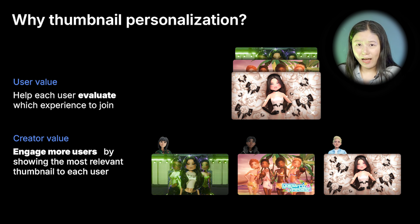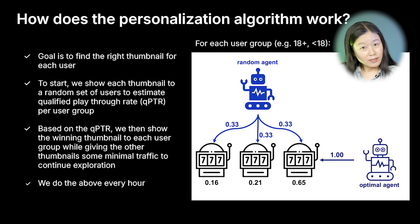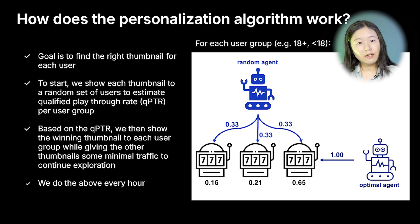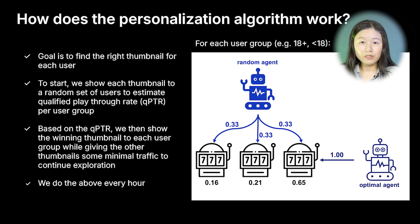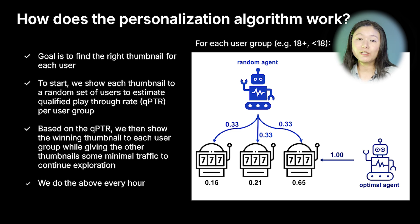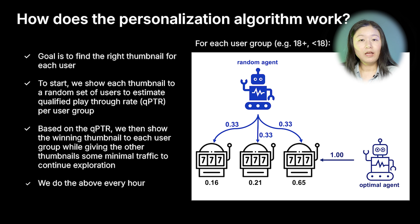Now, how does this algorithm work? Since the goal is to find the best, most relevant thumbnail for each user, we take a random group of user traffic for each thumbnail and estimate, based on their behavior and interaction with that thumbnail, the qualified playthrough rate. Based on that, the algorithm picks and shows the most winning thumbnail for that user group, while keeping a small amount of traffic for continued exploration in case preferences or thumbnail performance change. The whole algorithm is updated hourly so we can adapt to changing user preferences and platform trends.